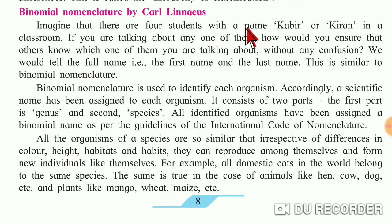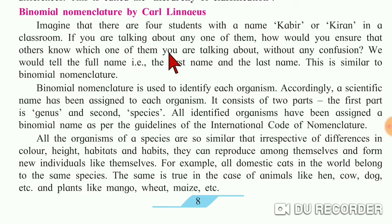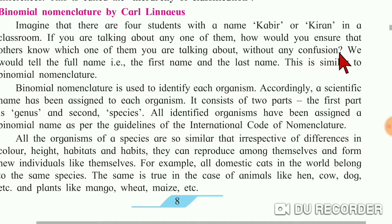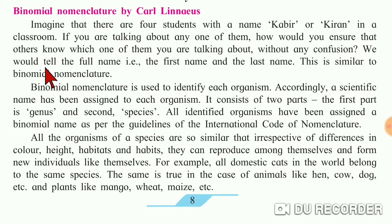Imagine that there are four students with the name Kabir or Kiran in a classroom. If you are talking about any one of them, how would you ensure others know which one you mean without confusion? We would tell the full name — that is, the first name and the last name. This is similar to binomial nomenclature.